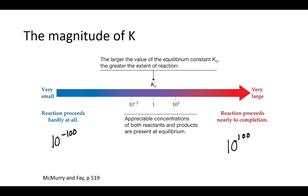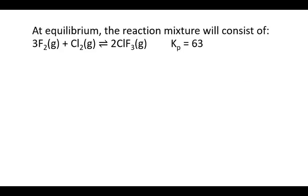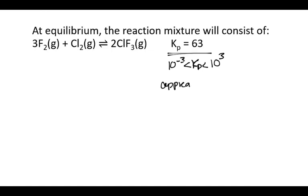These values of 10^−3 and 10^3 are not hard and fast — they're a general guideline. In that range, we can expect appreciable or measurable concentrations of both reactants and products. So let's interpret our reaction: we found Kp = 63. Because Kp is between 10^−3 and 10^3, we would say that we have appreciable concentrations of both reactants and products — so we have a mixture of reactants and products at equilibrium for this reaction.